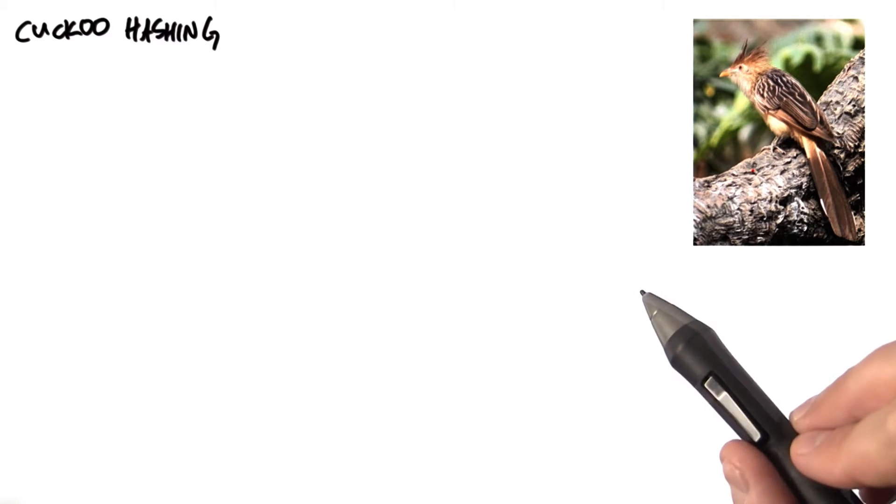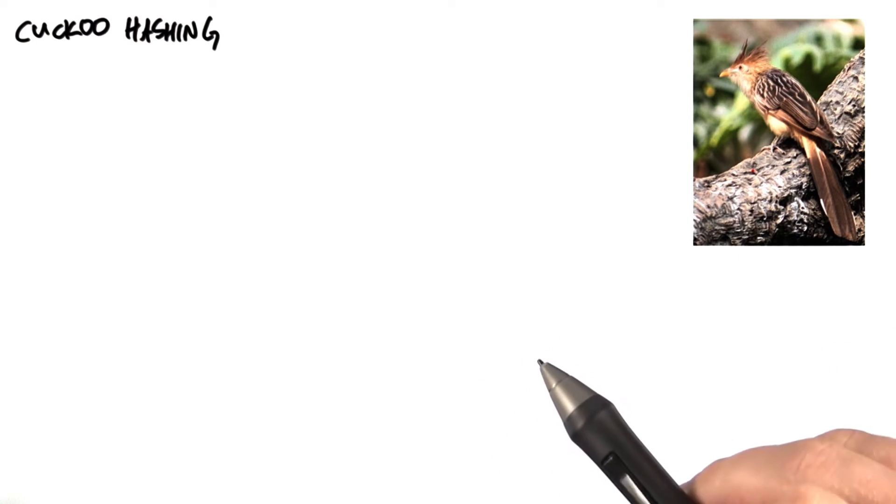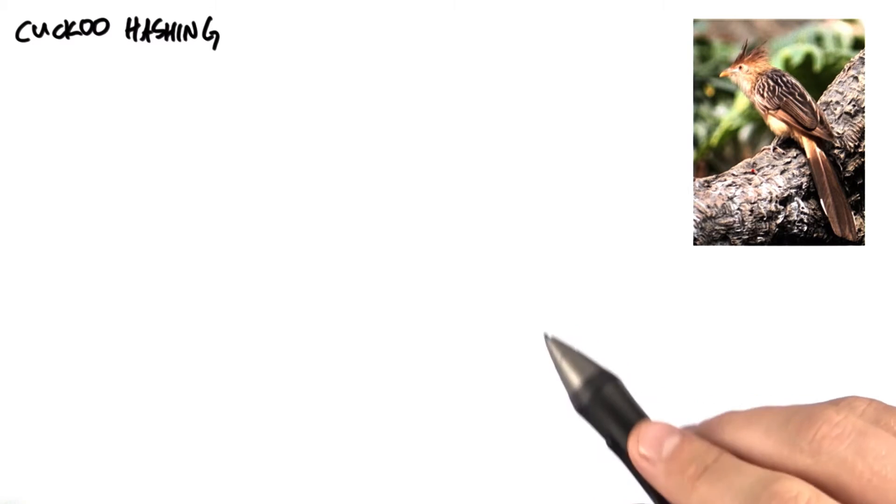This is a cuckoo bird, thanks Wikipedia, and it's termed a brood parasite. But let's put it into more understandable English. This bird is one of the biggest jerks in the animal kingdom.